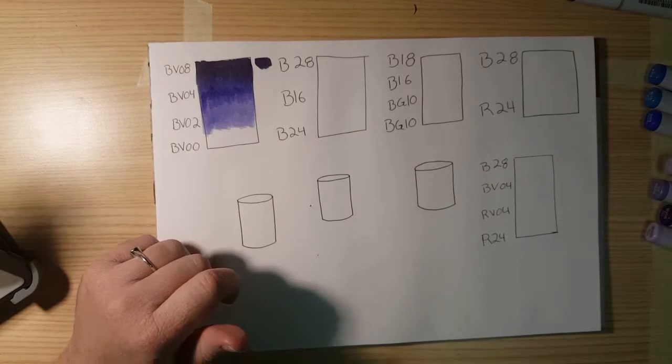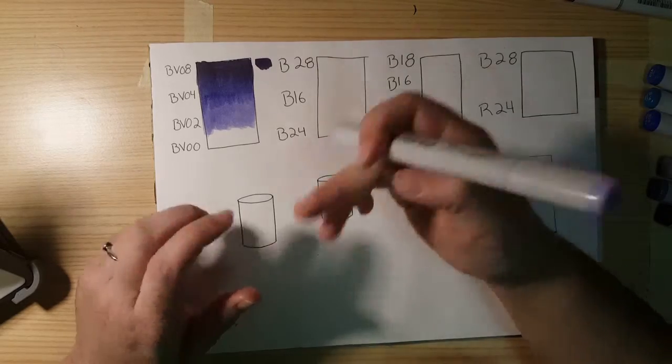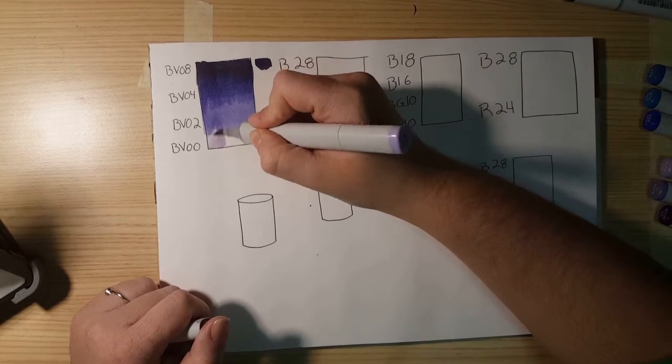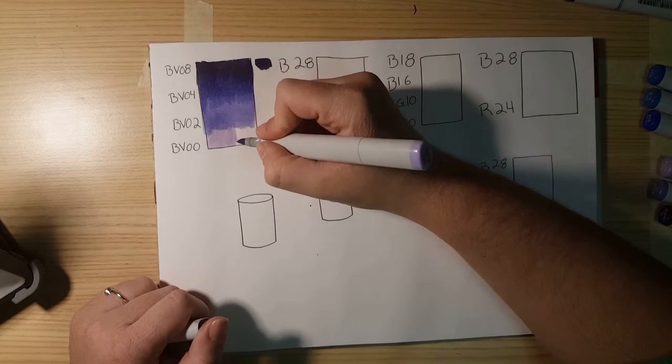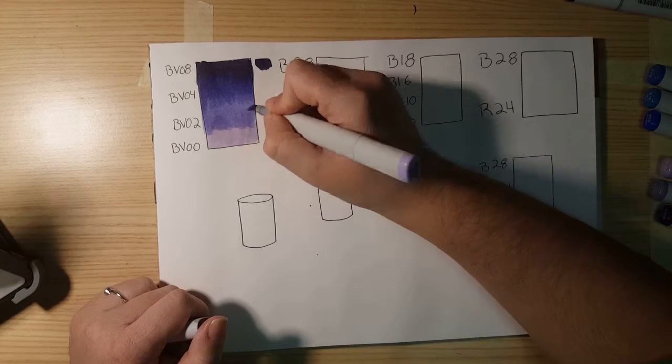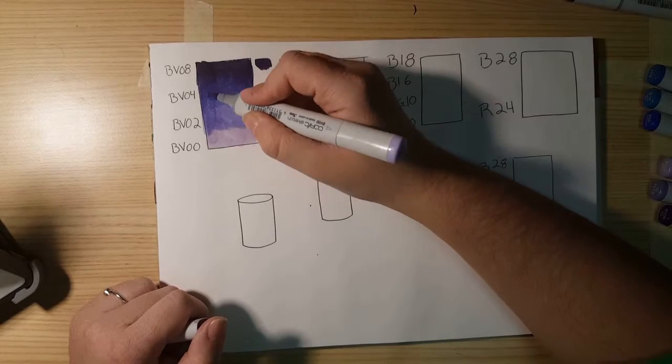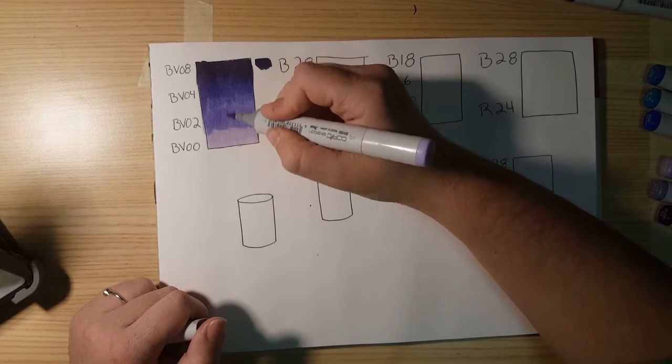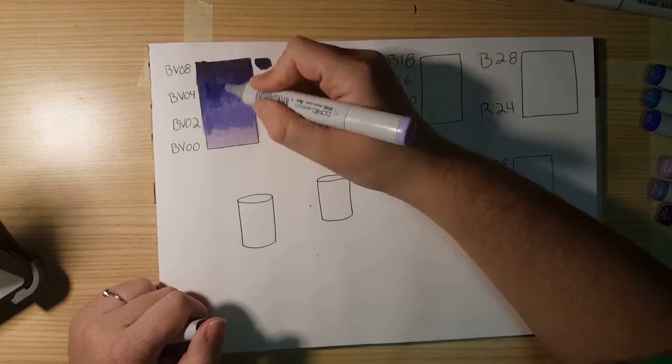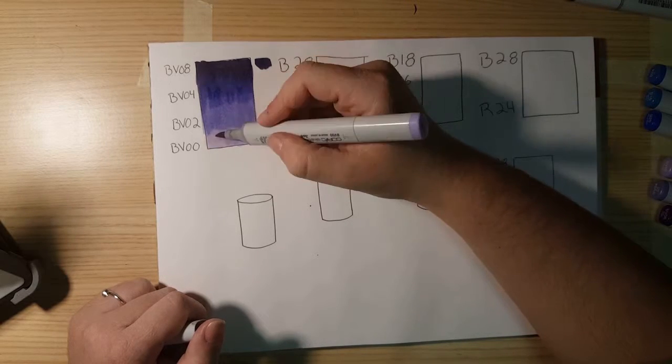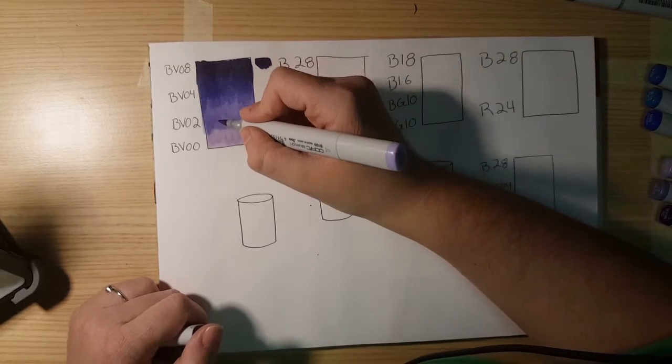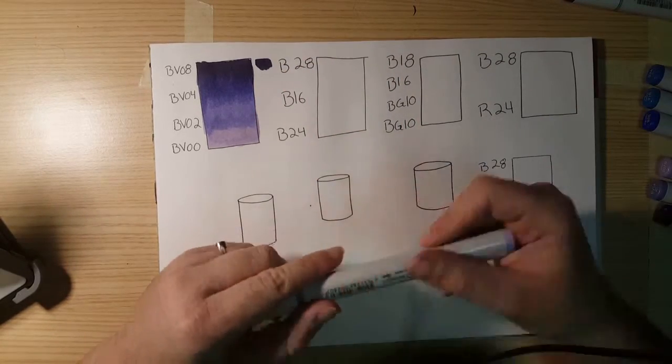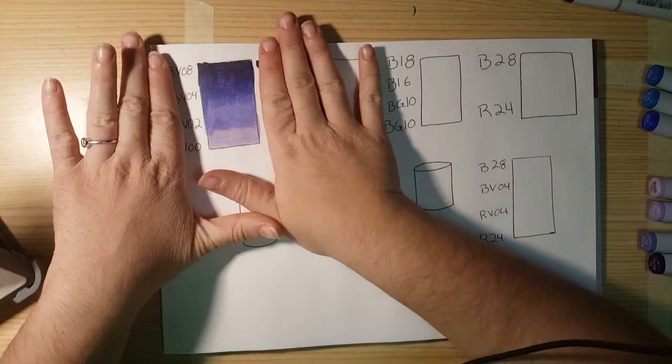And then, once that's done, use the lightest color, my BV00. Now on this one, I usually like to start at the back and then do the flicking motion into the second lightest color. And I believe my marker is actually starting to run out of ink a little bit. I'll have to get a refill for that one. But it's not the nicest gradient in the world, but it's not too bad.